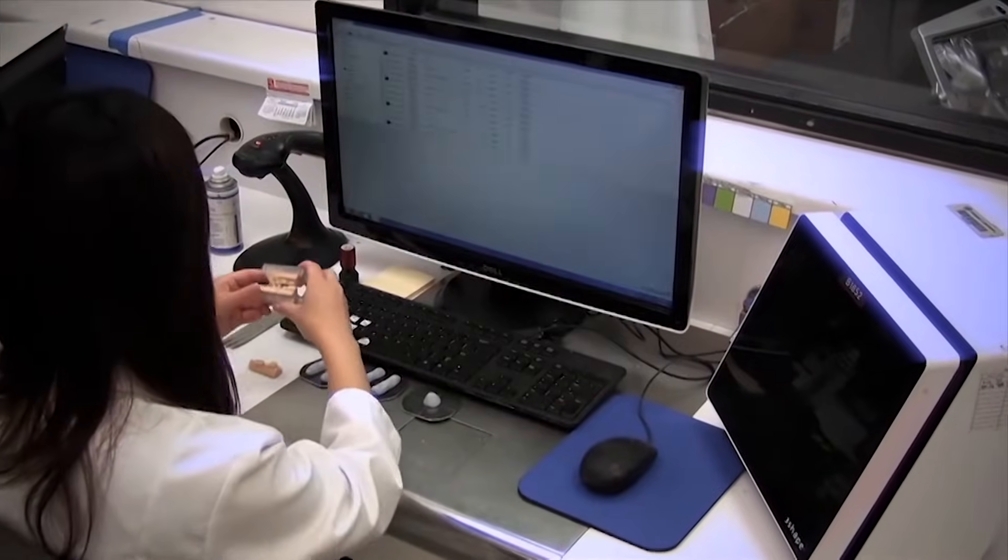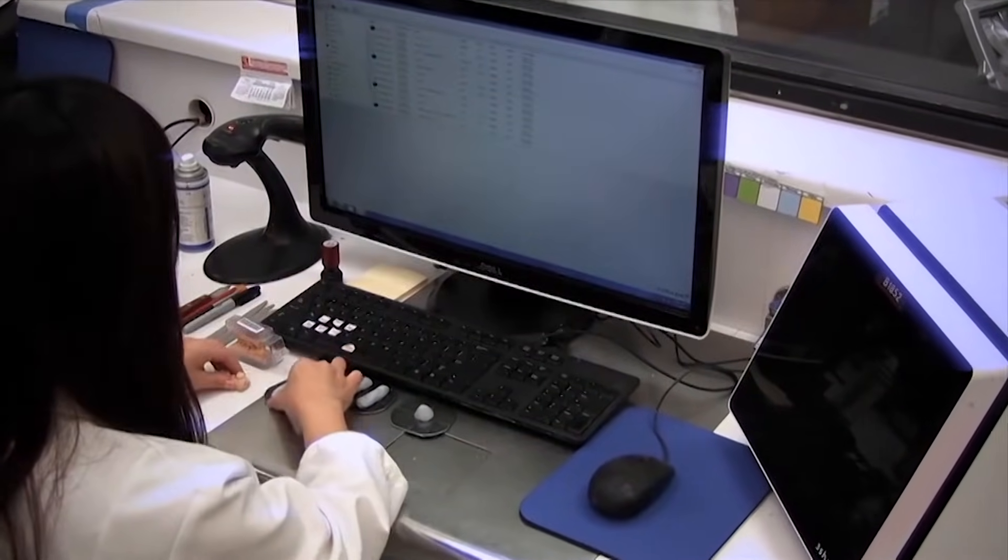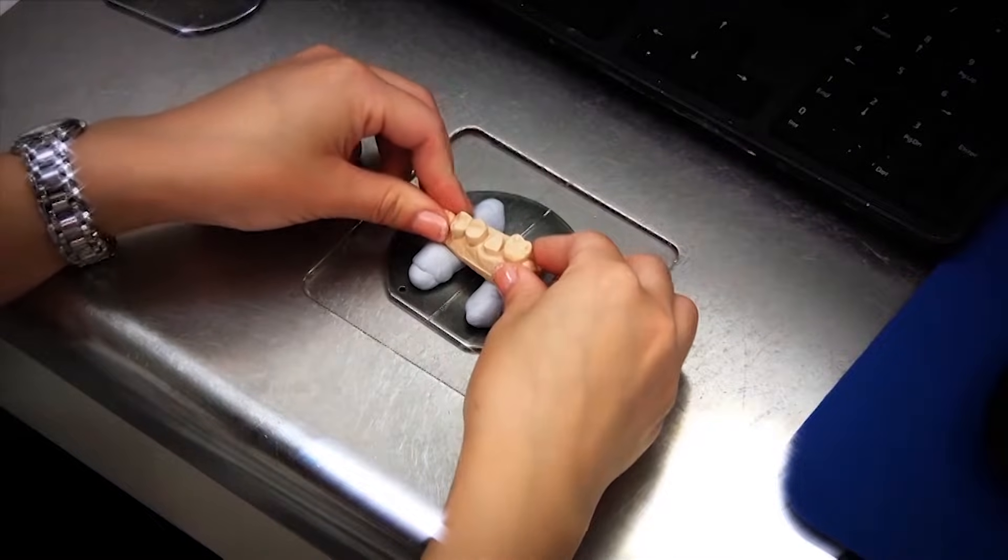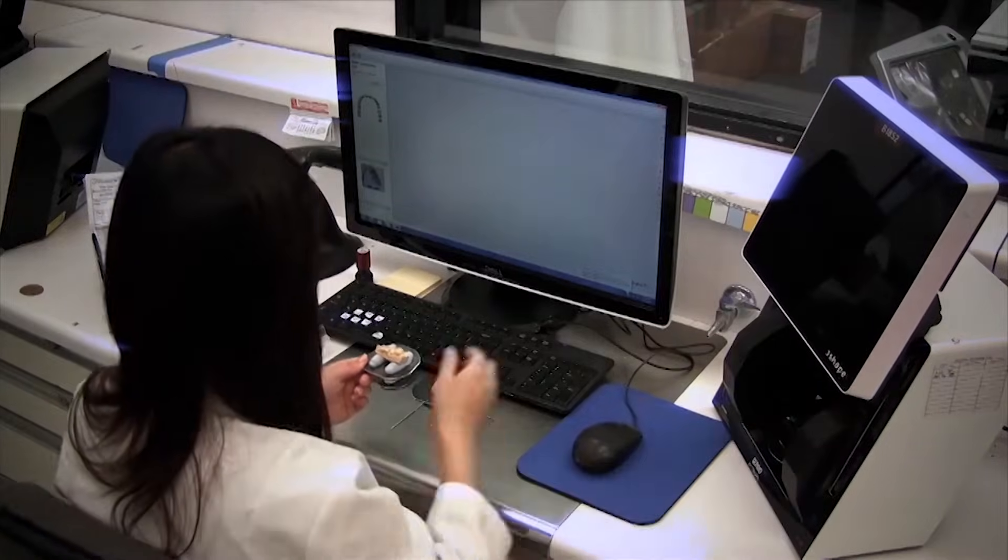So here's the production of a Bruxer crown start to finish. This is a dentist who sent us a polyvinyl siloxane impression, so we poured it up in stone. There's the stone model right there of the prep arch.